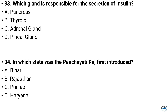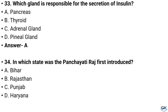Question number 33. Which gland is responsible for the secretion of insulin? Option A: Pancreas, Option B: Thyroid, Option C: Adrenal gland, Option D: Pineal gland. And the answer is Option A: Pancreas.